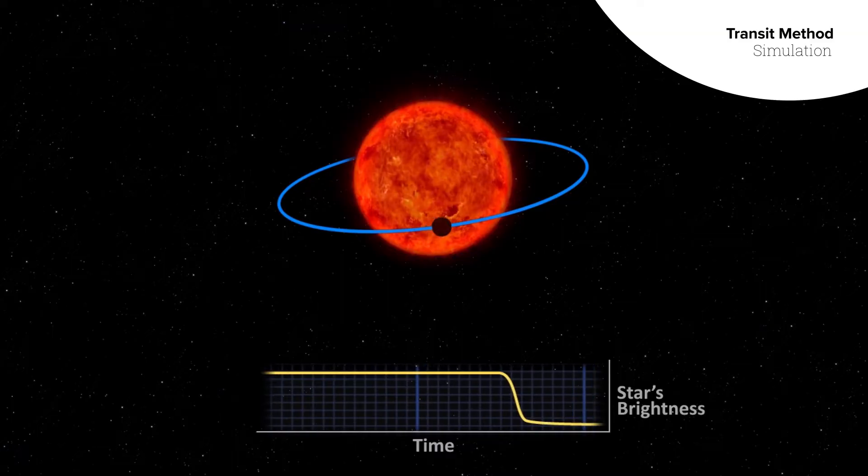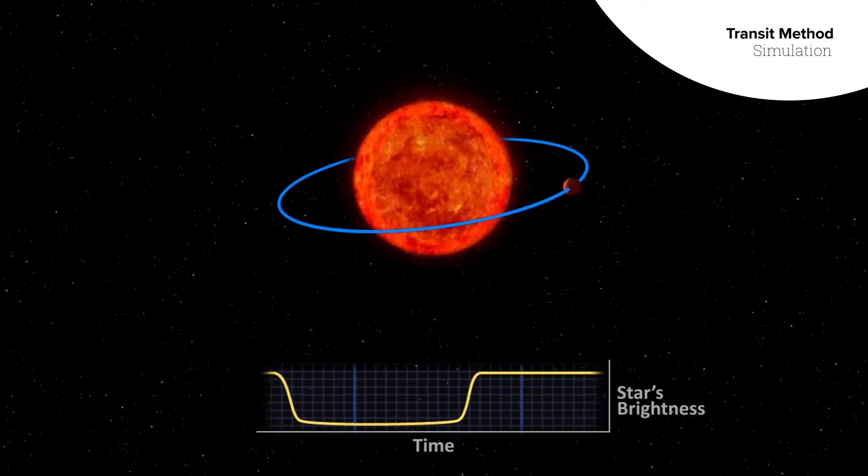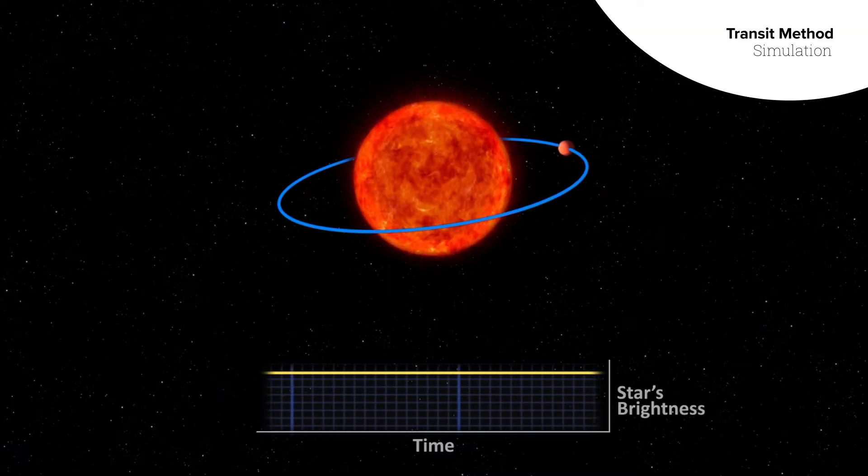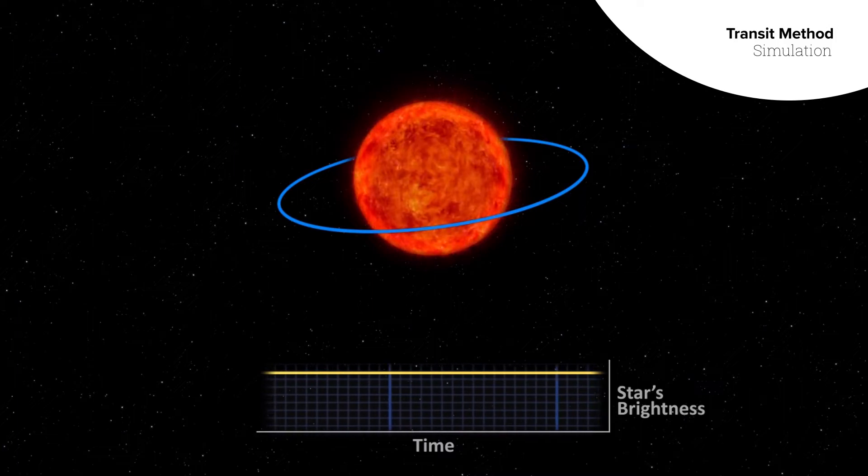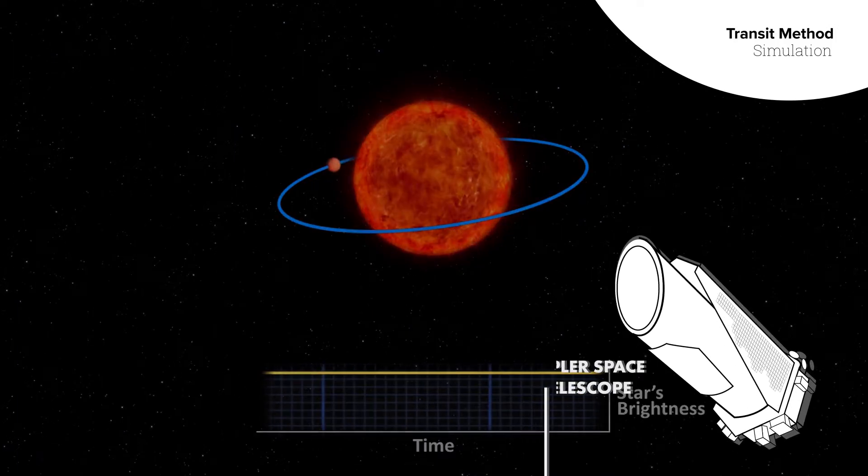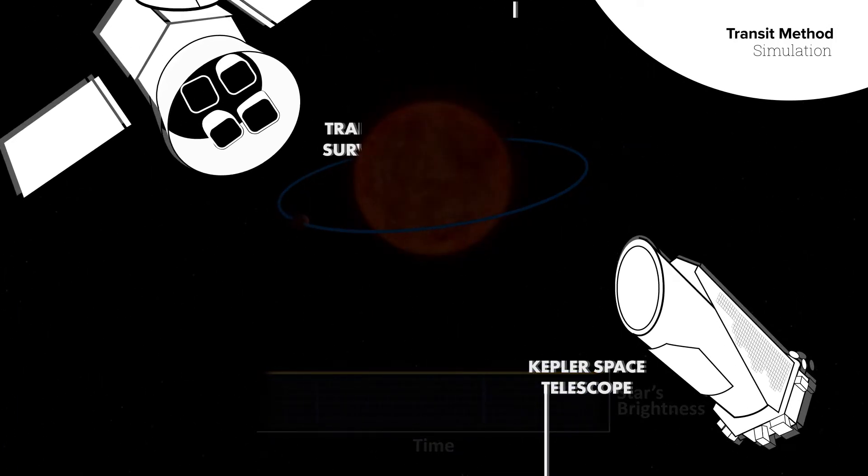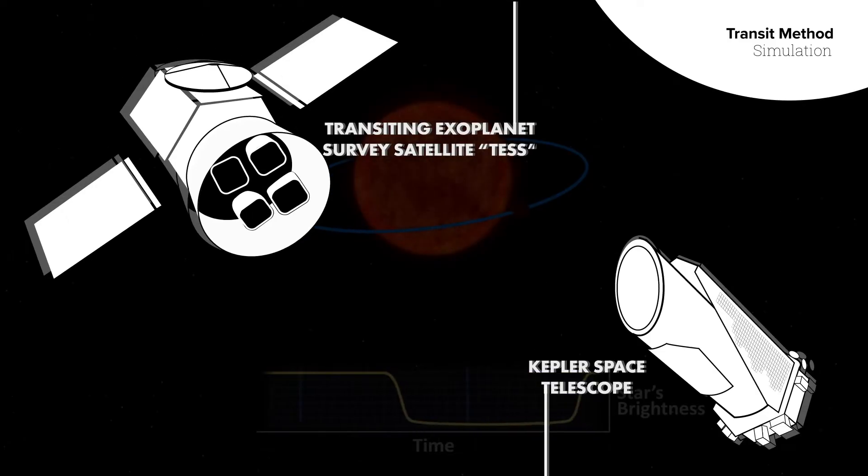The most common method is to look for an eclipse or transit as a planet passes in front of its host star. This is how the Kepler Observatory found planets, by staring at a large region of the sky and waiting for planets to pass in front of their stars, taking snapshots every second.